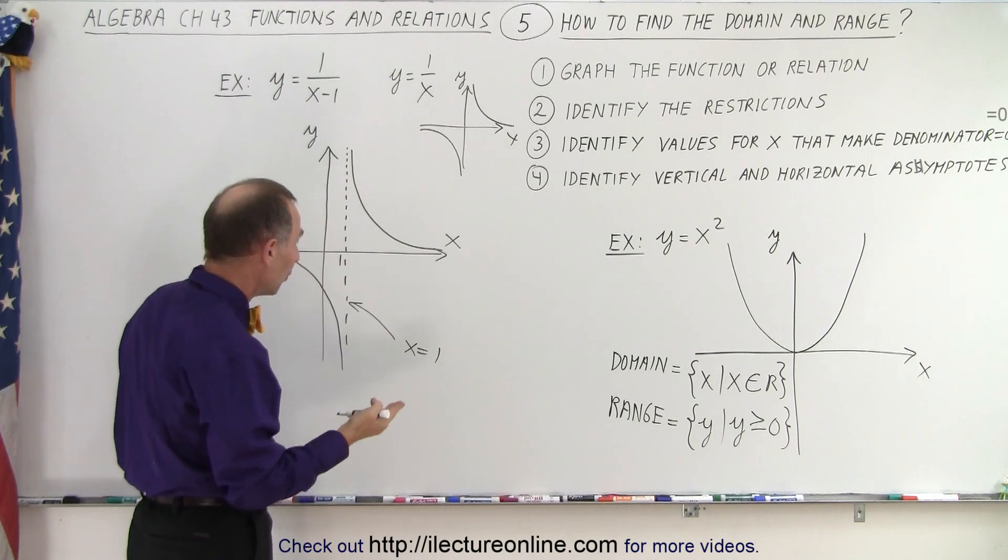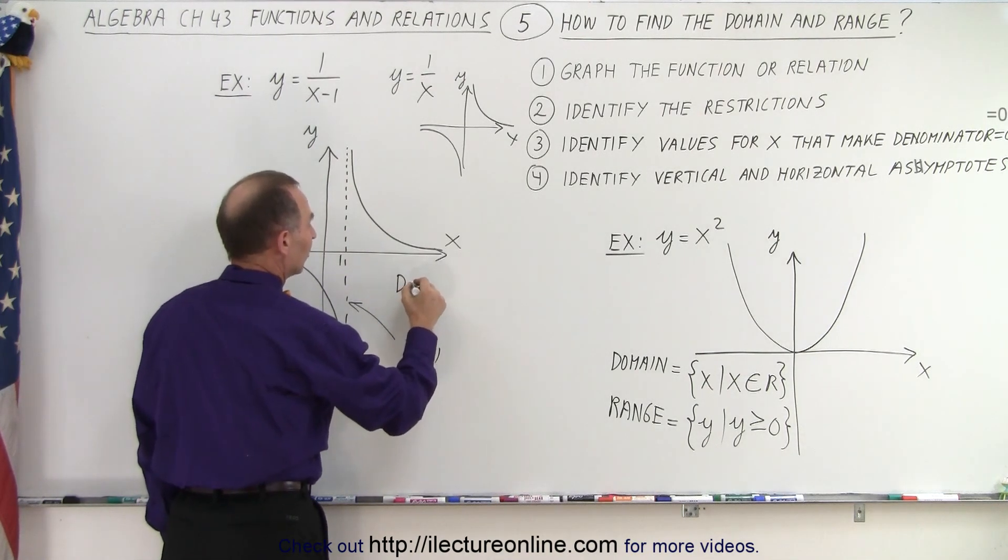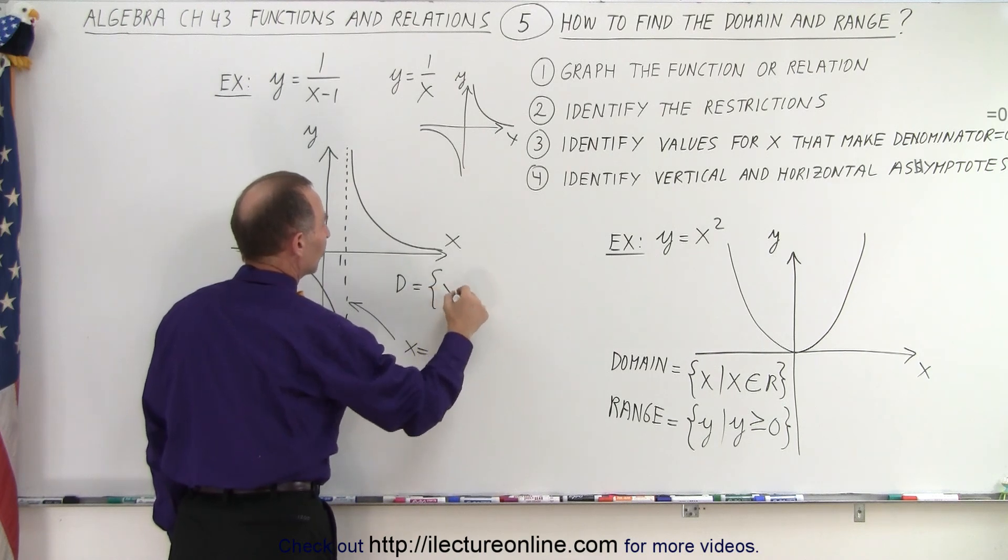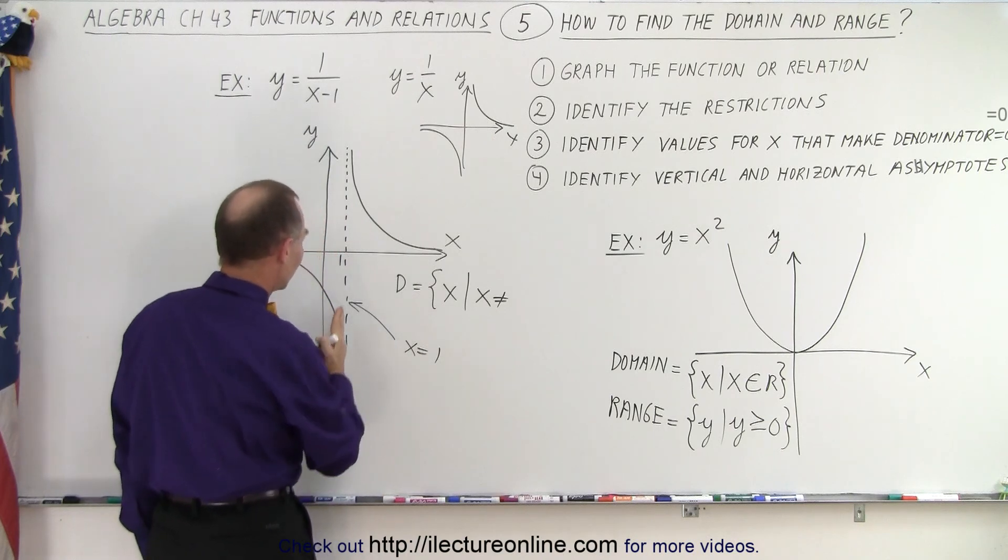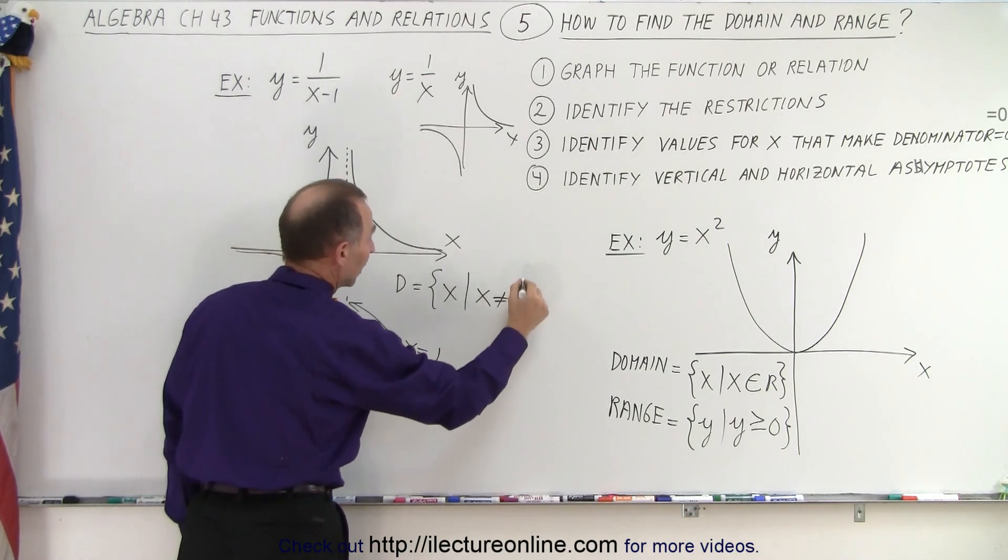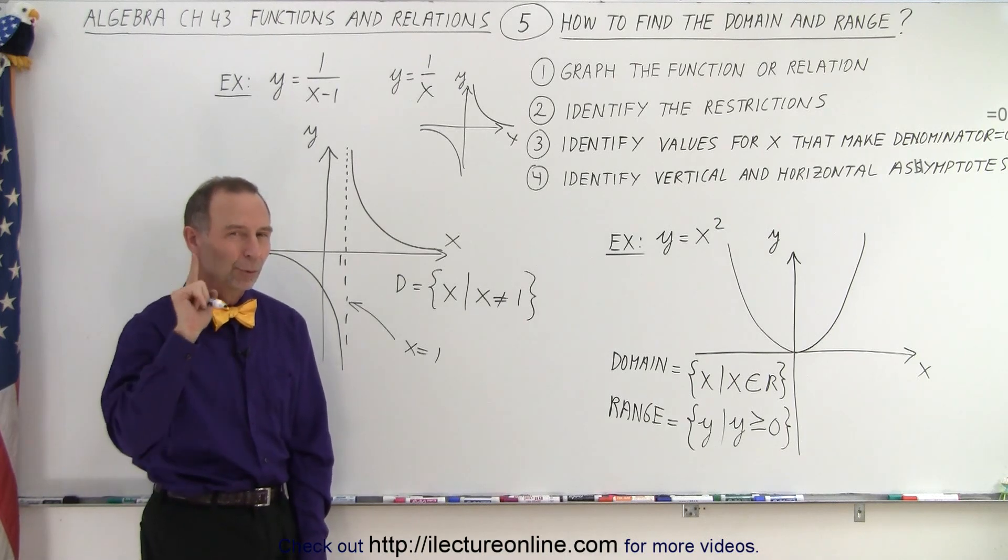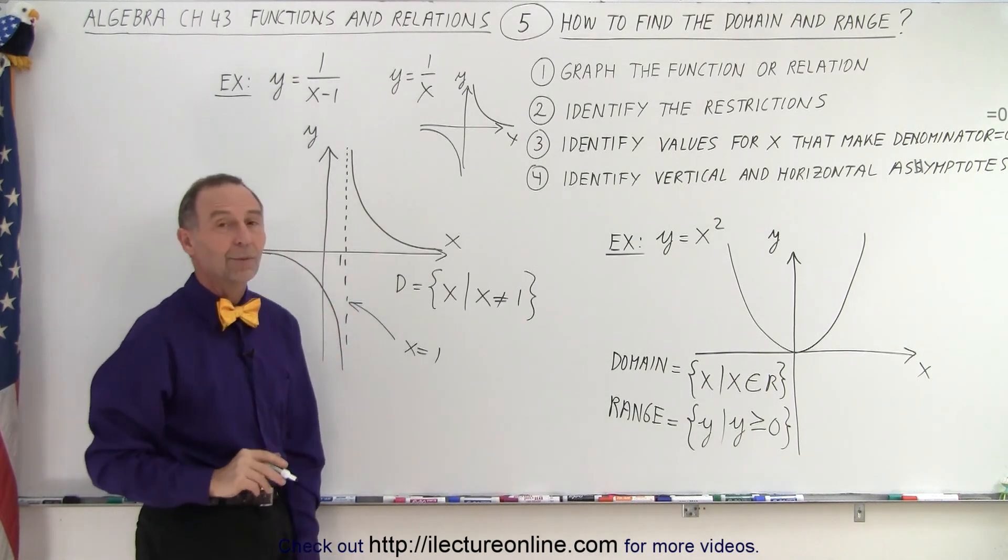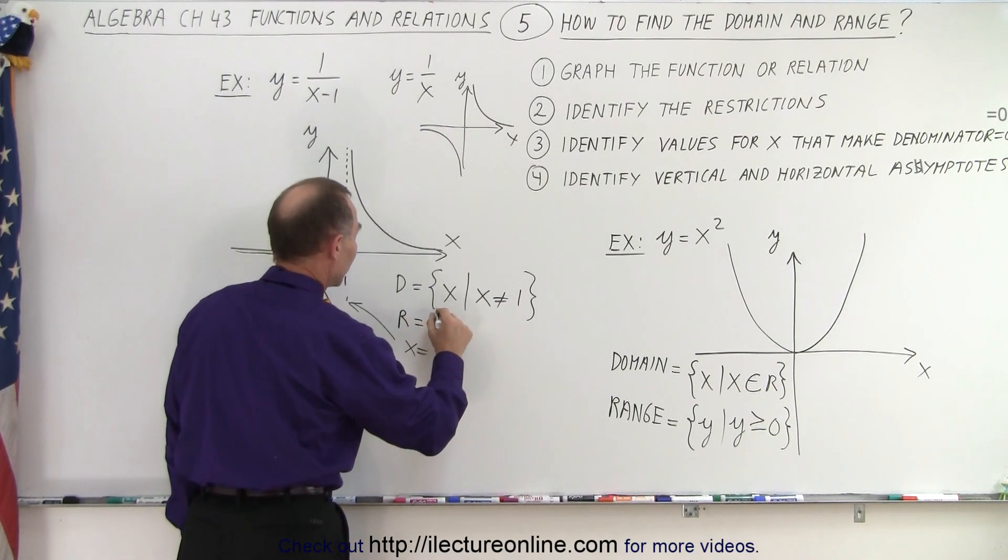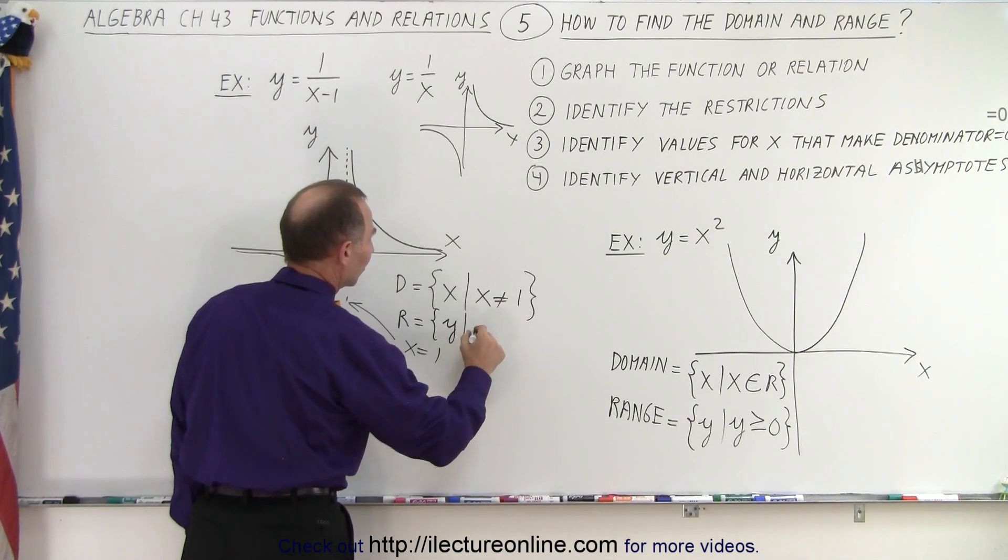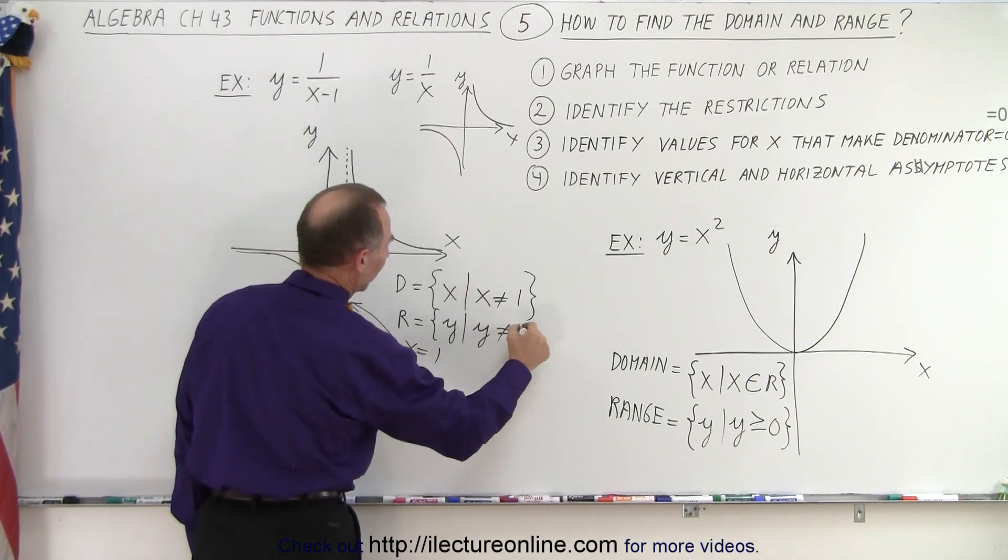So now, if we're going to write the domain and the range, the domain is equal to all the numbers x, such that x is not equal to, since it cannot equal 1, we can simply define it like that. All x's, with one exception, x cannot equal 1. That's one way to write the domain, and the range is the values of all the y's, such that y is not equal to, in this case, that would be 0.